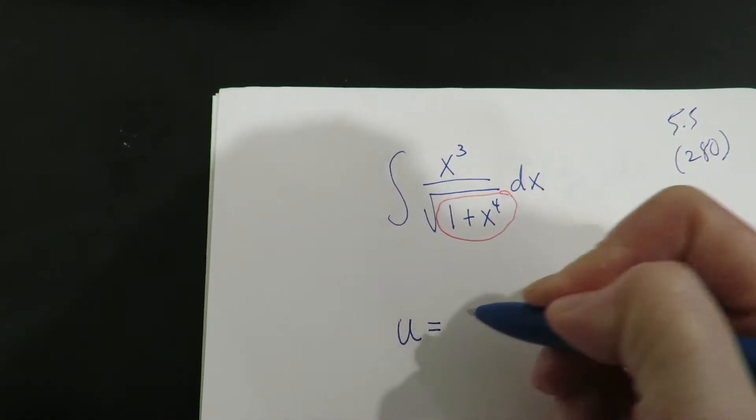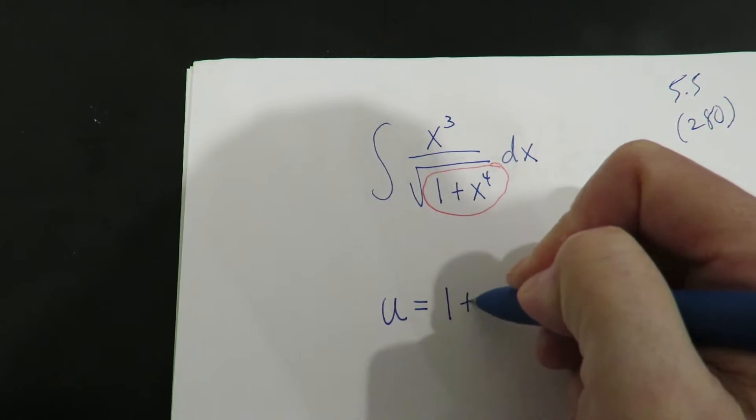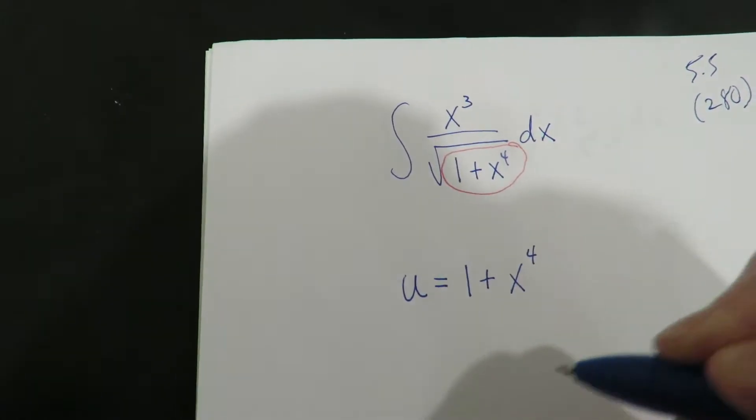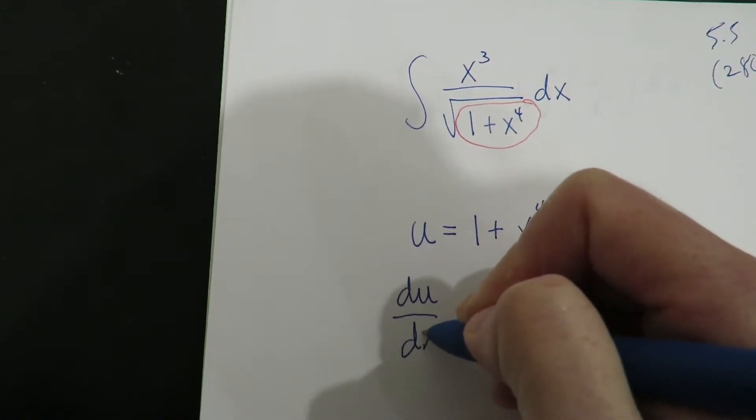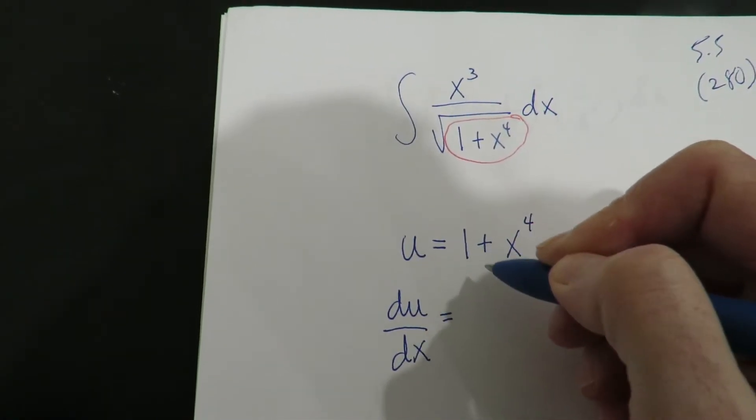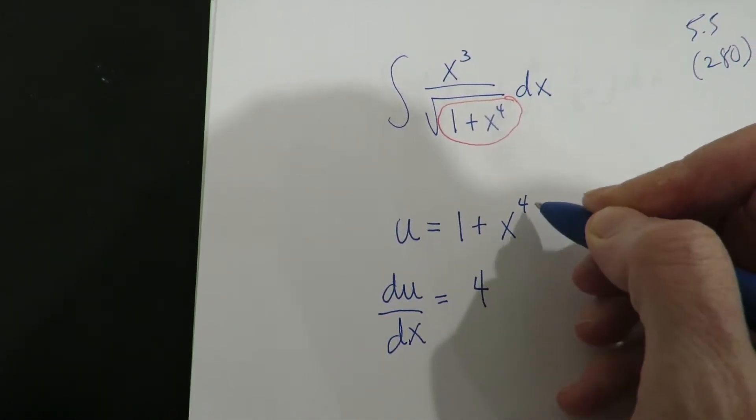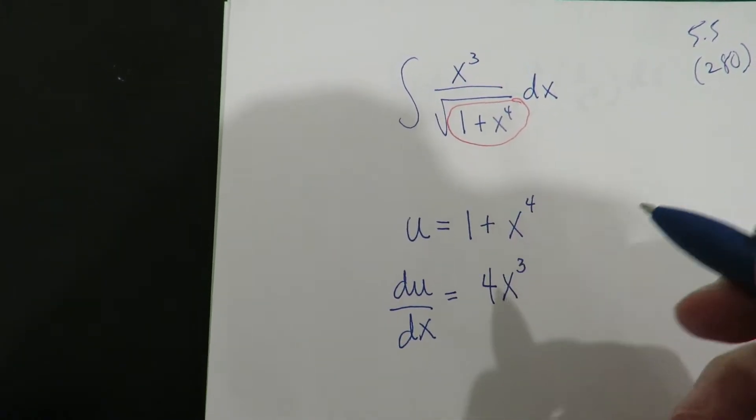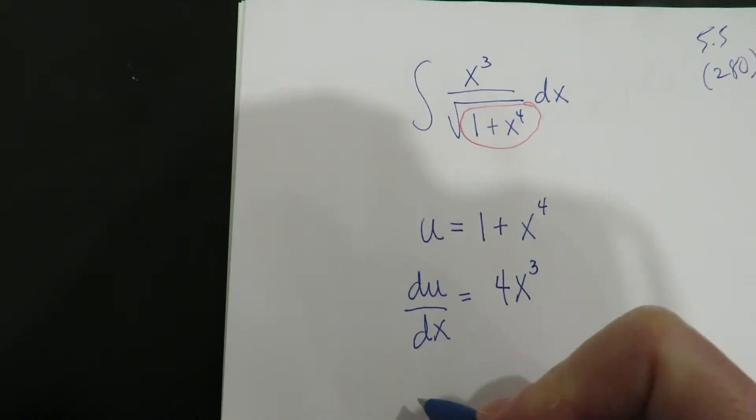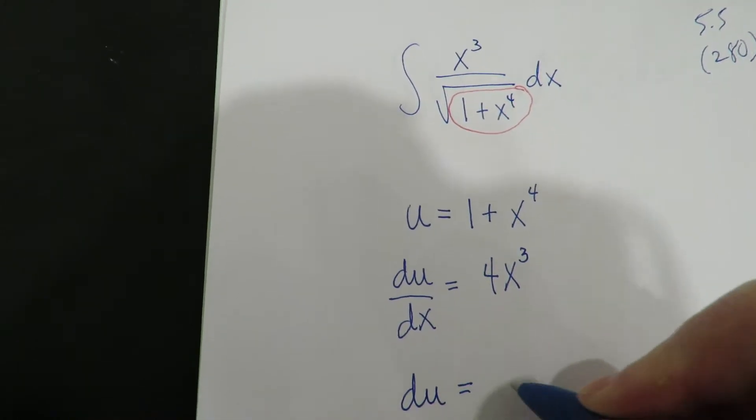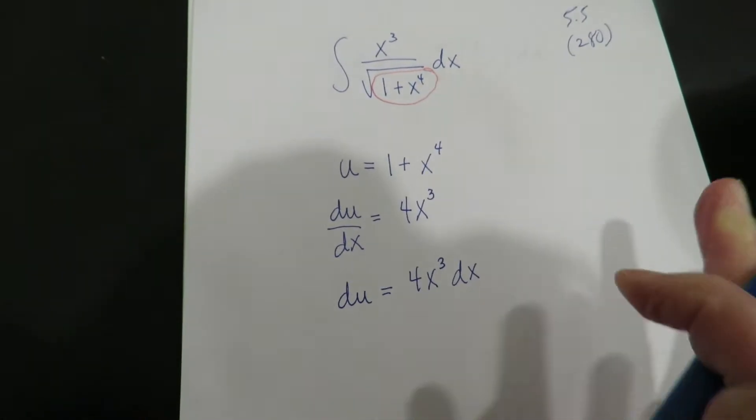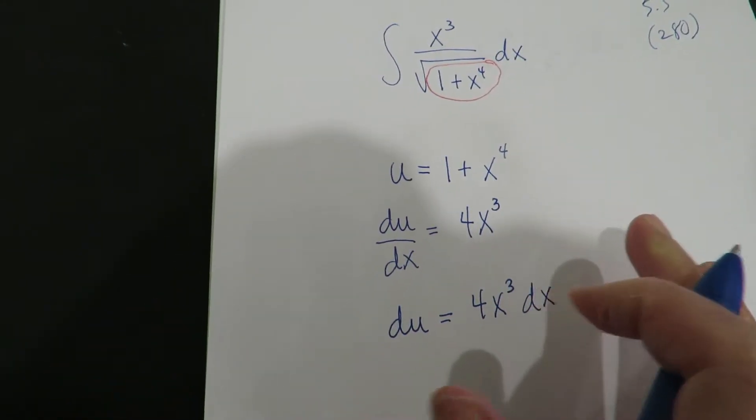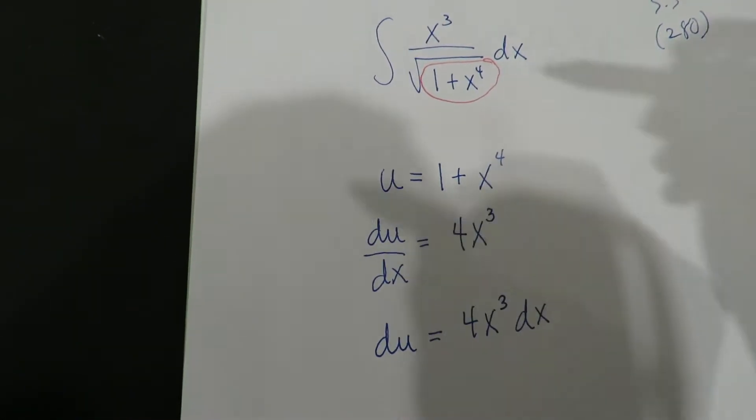So u is going to be 1 plus x to the fourth. You take the derivative of this, so du/dx is equal to 4x to the third. Then you split these things up, so you're gonna get du equals 4x to the third dx. At this point, once you get this information, you want to do the substitution. This is where the substitution comes in.